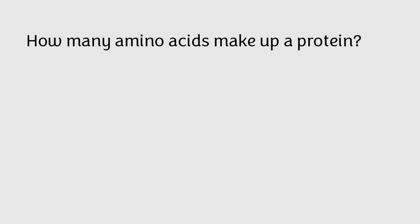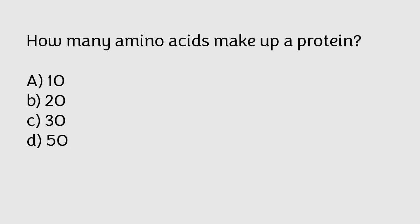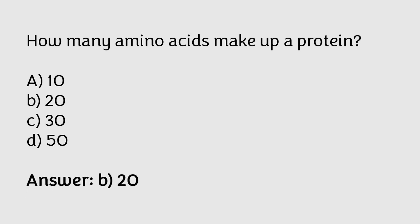How many amino acids make up a protein? 10, 20, 30, 50. The correct answer is option B. There are 20 amino acids that make up a protein.